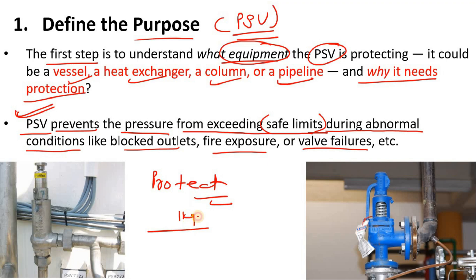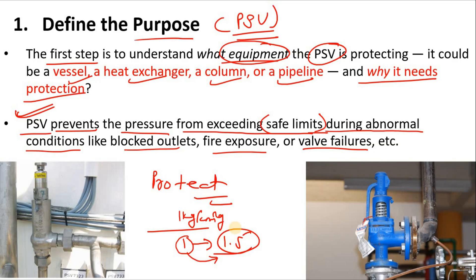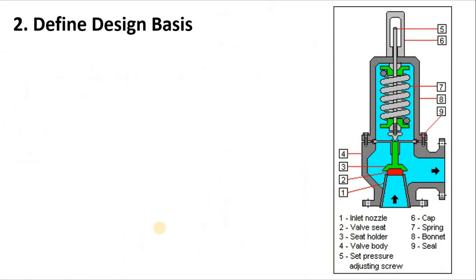For example, let's say you want the pressure in a line to be 1 kg/cm²g. If the pressure goes from 1 to 1.5, that is your abnormal condition. This could create an unsafe condition for the line as well as for the downstream system. So we install a PSV with a set pressure of 1, which saves the pipeline and downstream system from over-pressurization.